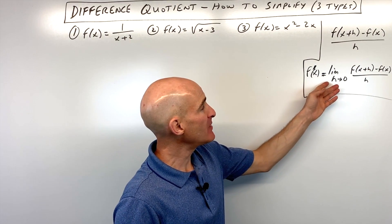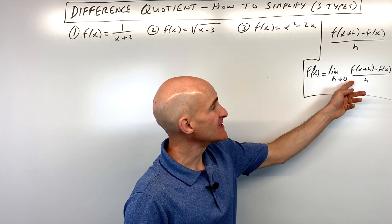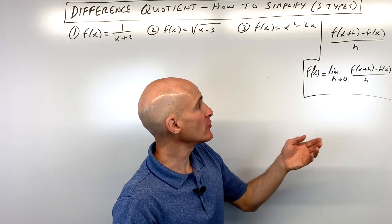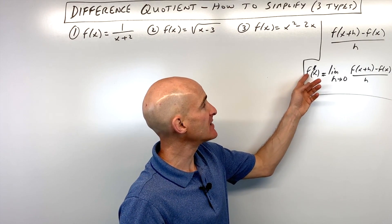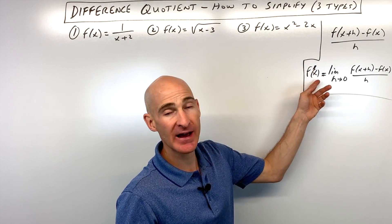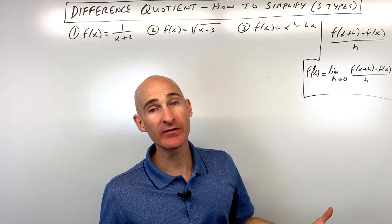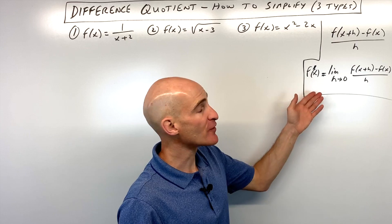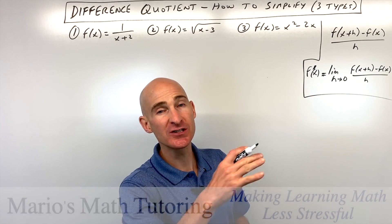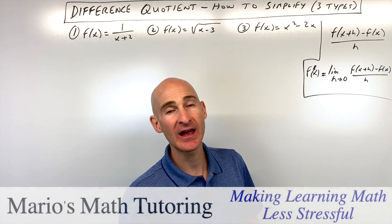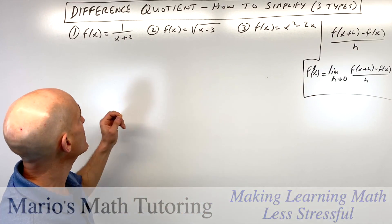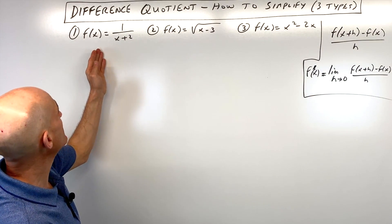If you take the limit as h approaches zero, we'll take it one step further — what you're finding is f prime of x, which is the derivative. The derivative is a formula for the slope at a point, so it's the instantaneous rate of change.